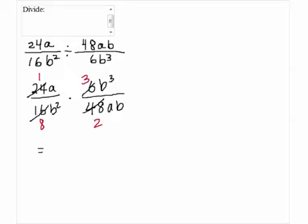Now let's look at the variables. We have A on top and bottom, so it will be canceled. And we have 3Bs on the bottom and 3Bs on top, so Bs also cancel.